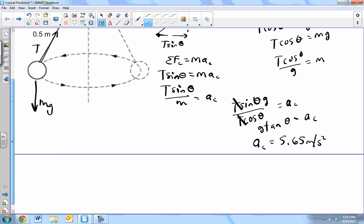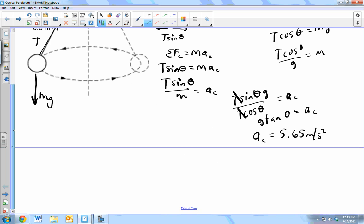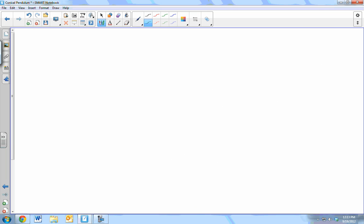That's centripetal acceleration. The speed of the ball is related through centripetal acceleration v squared over r. Multiply by r, take the square root, equals the velocity.